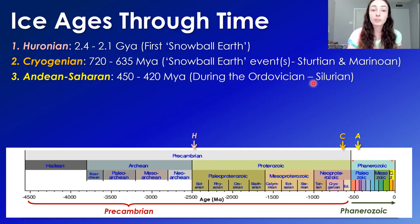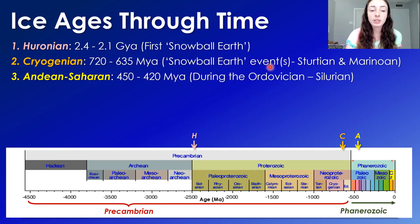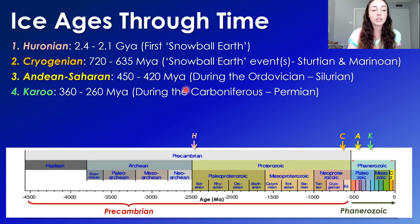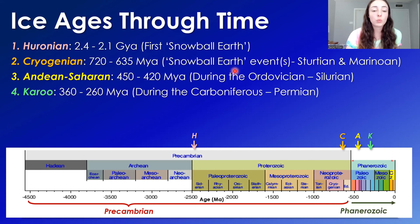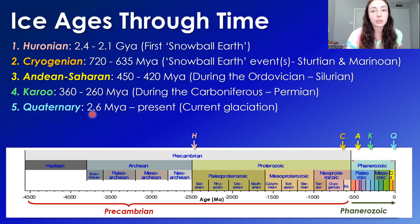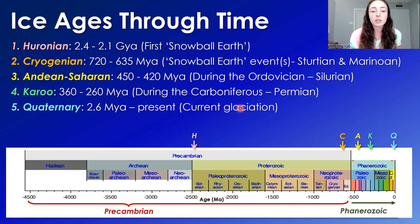Then the Andean-Saharan, or Ordovician ice age, which contributed to the end-Ordovician mass extinction, occurred from around 450 to 420 million years ago. We also have the Carew, or Carboniferous ice age, a really long one spanning from around 360 to 260 million years ago — the largest ice age in the Phanerozoic eon since the Cambrian period. Then we have the modern, or Quaternary ice age, from around 2.6 to 3 million years ago to present, with a cooling trend initiated around 30-something million years ago that intensified around 2.6 million years ago.